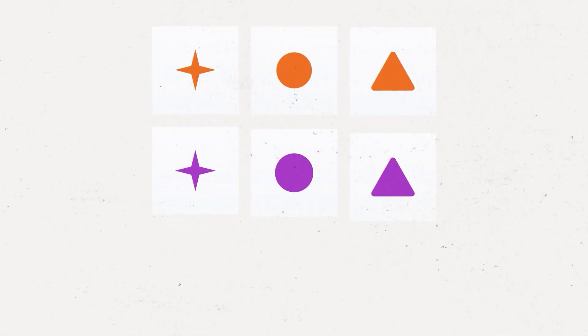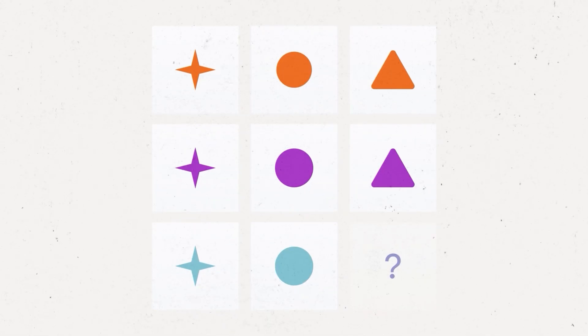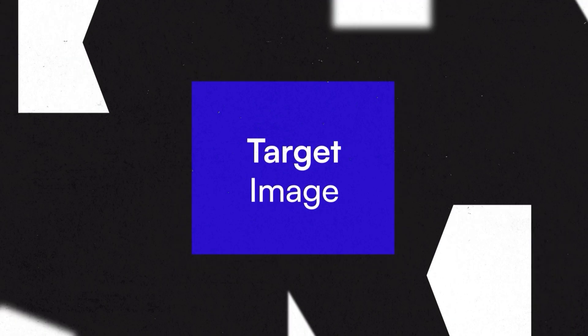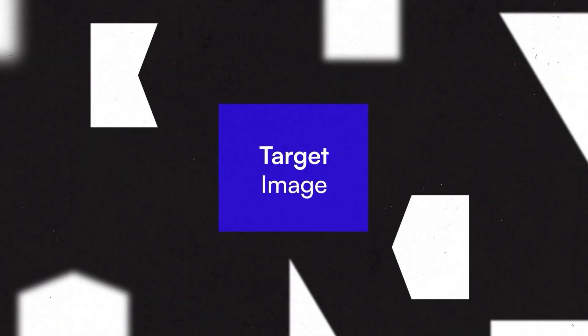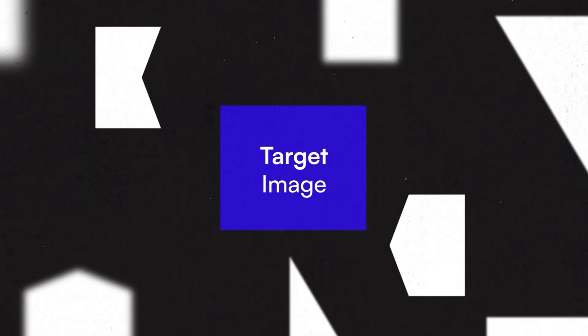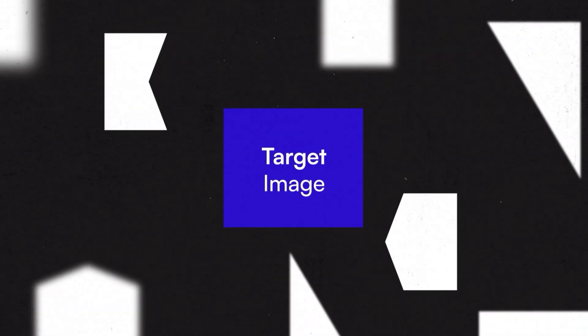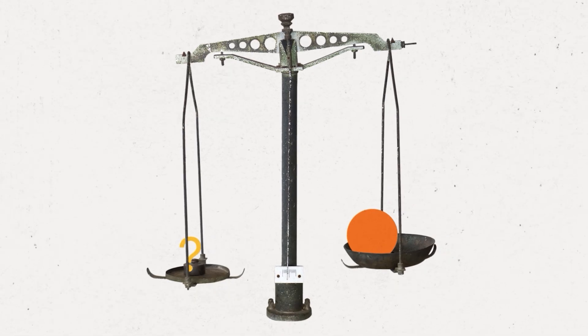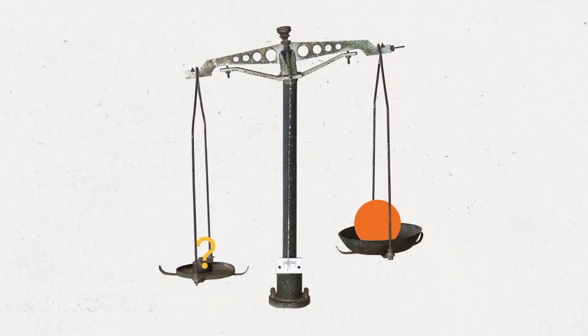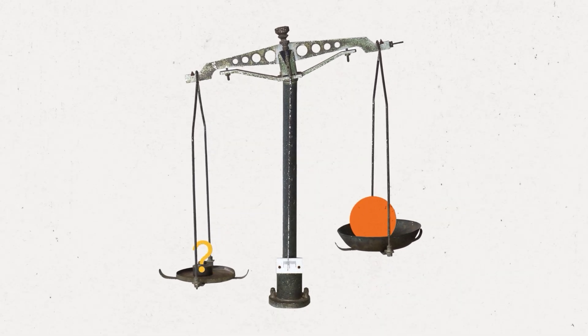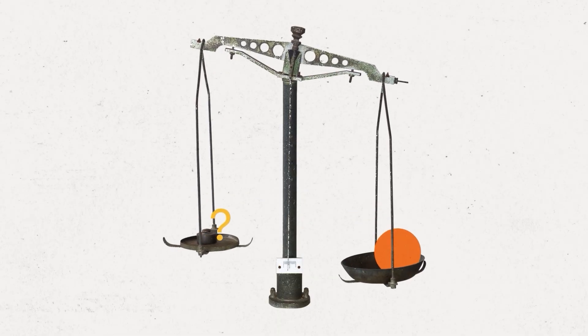In the Matrix Reasoning subtests, examinees must identify which option would complete a 3x3 grid of squares. Each question in the Visual Puzzles subtest has a simple image and eight options. Test takers are then asked which options can be combined to form the image. In the Figure Weight subtests, examinees are shown shapes on one side of a scale and must figure out which shapes would balance out the other side.